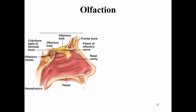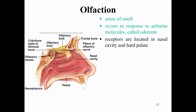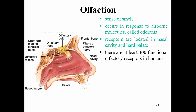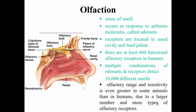Olfaction is our sense of smell. It occurs in response to airborne molecules called odorants. Receptors are located in the nasal cavities and the hard palate. There are at least 400 functional olfactory receptors in humans, with multiple combinations of odorants and receptors that can detect at least 10,000 different smells. Olfactory range and sensitivity is greater in some animals due to their larger olfactory organs and more sensitive olfactory receptors.